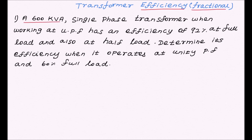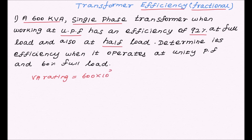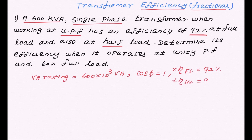The problem is: a 600 kVA single phase transformer, when working at unity power factor, has an efficiency of 92% at full load and also at half load. The VA rating of the transformer is given as 600 kVA, which is equal to 600 × 10³ VA. Power factor cos φ is equal to 1. Efficiency at full load is 92% and efficiency at half load is also 92%.